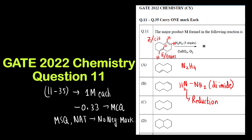For answering this question, this is a regioselective type of question. The meaning of that is either one of the alkenes will be reduced and the other alkene will not be reduced — either the cis is reduced or the trans is reduced. For that we must know the order of reactivity.